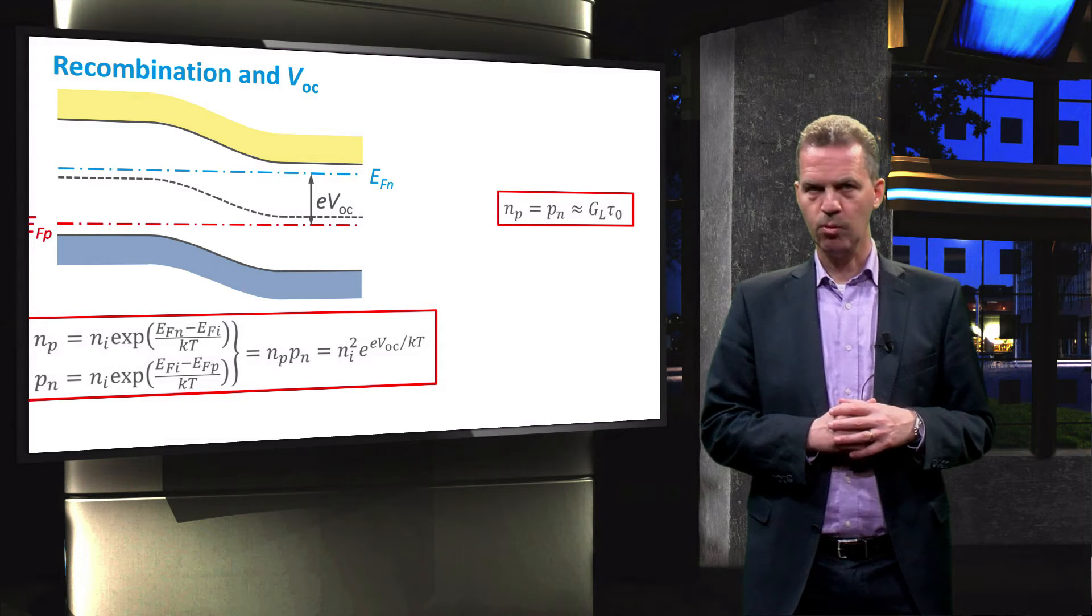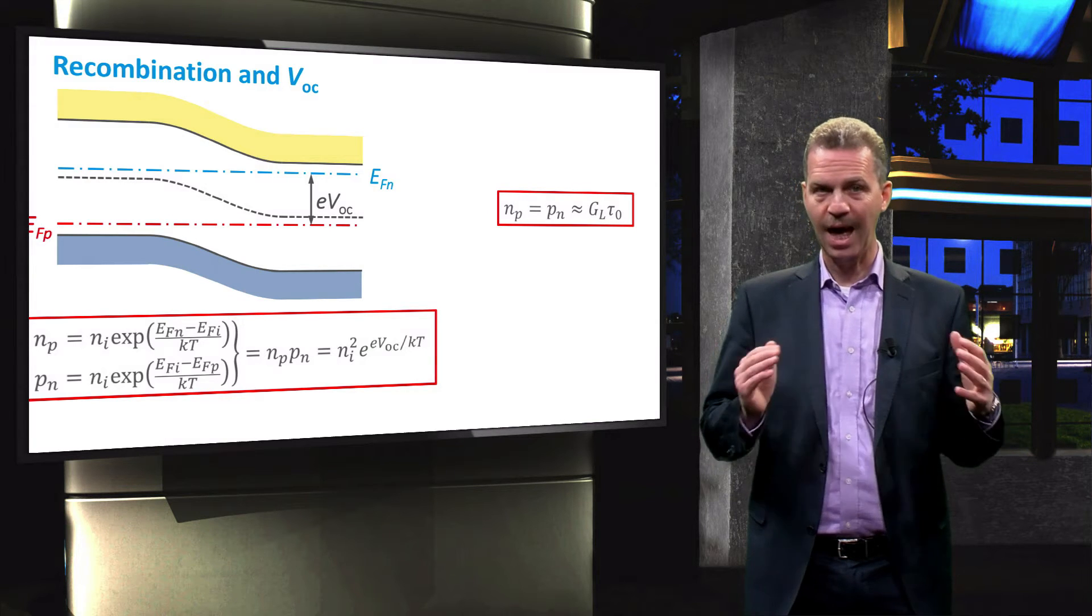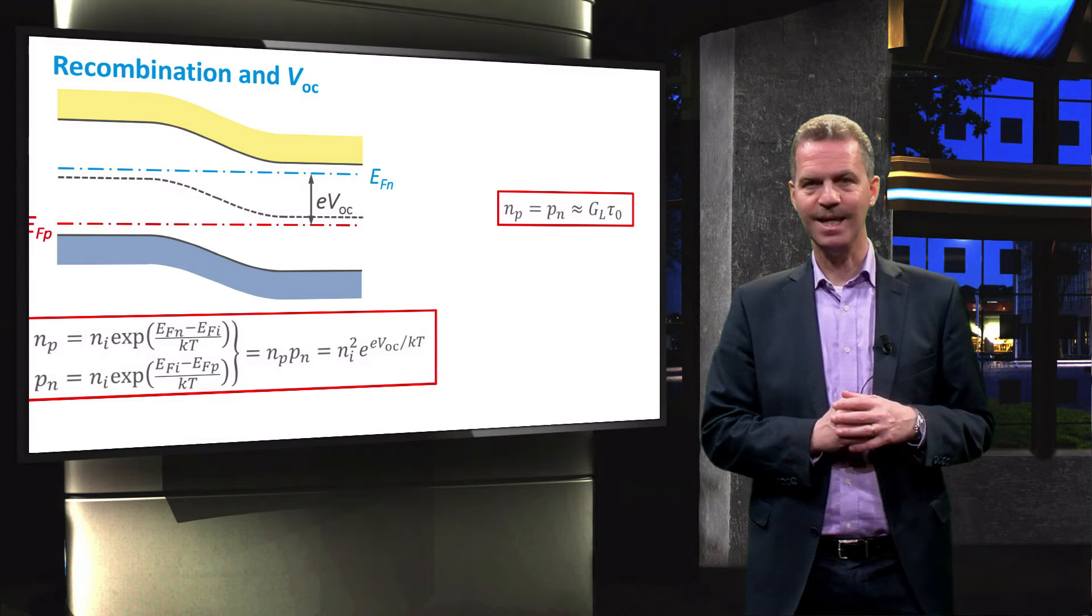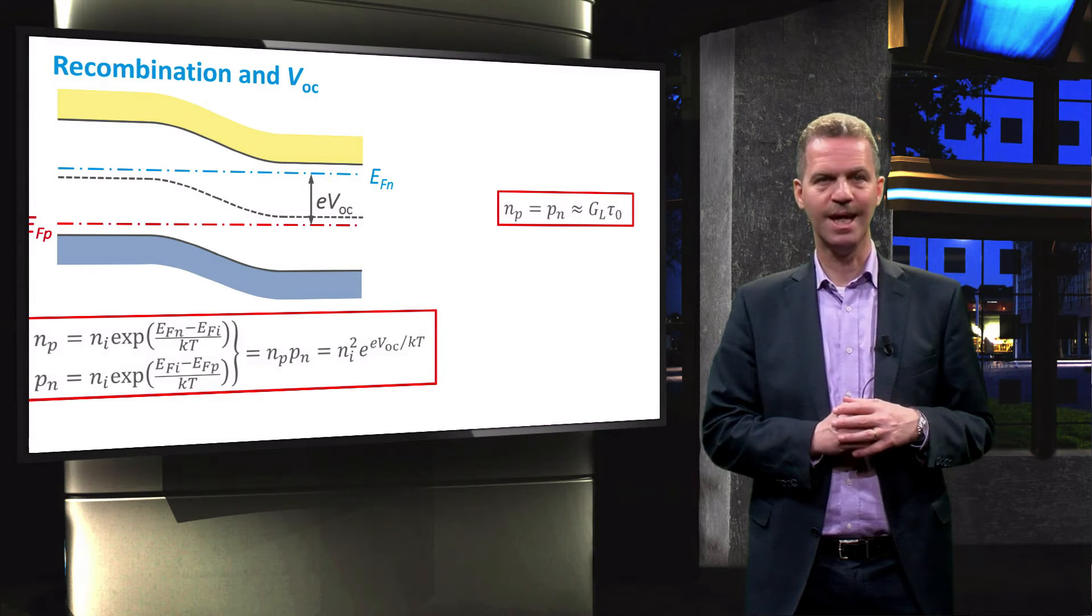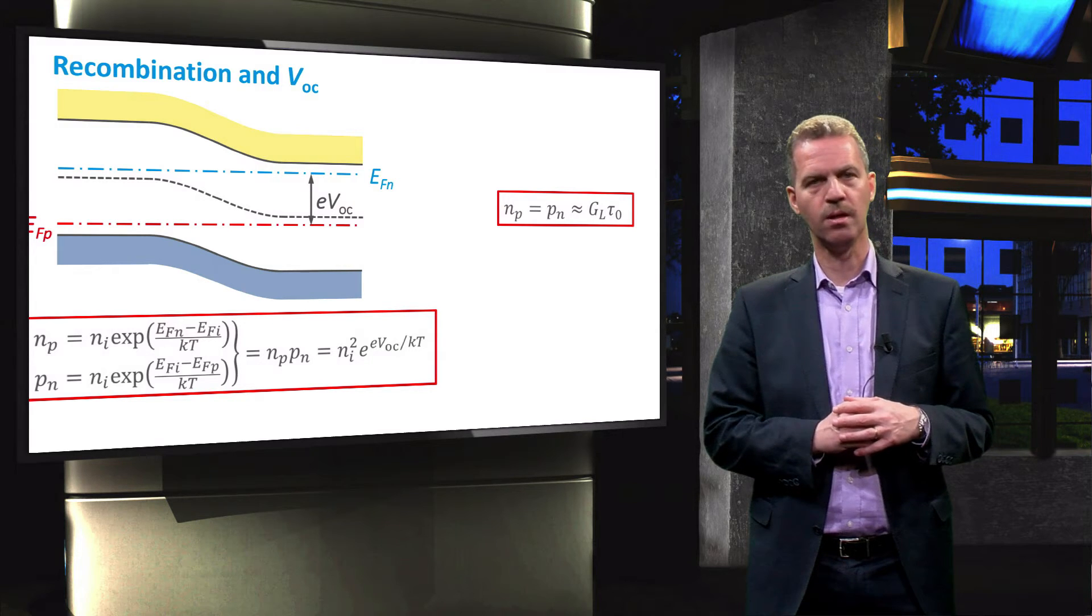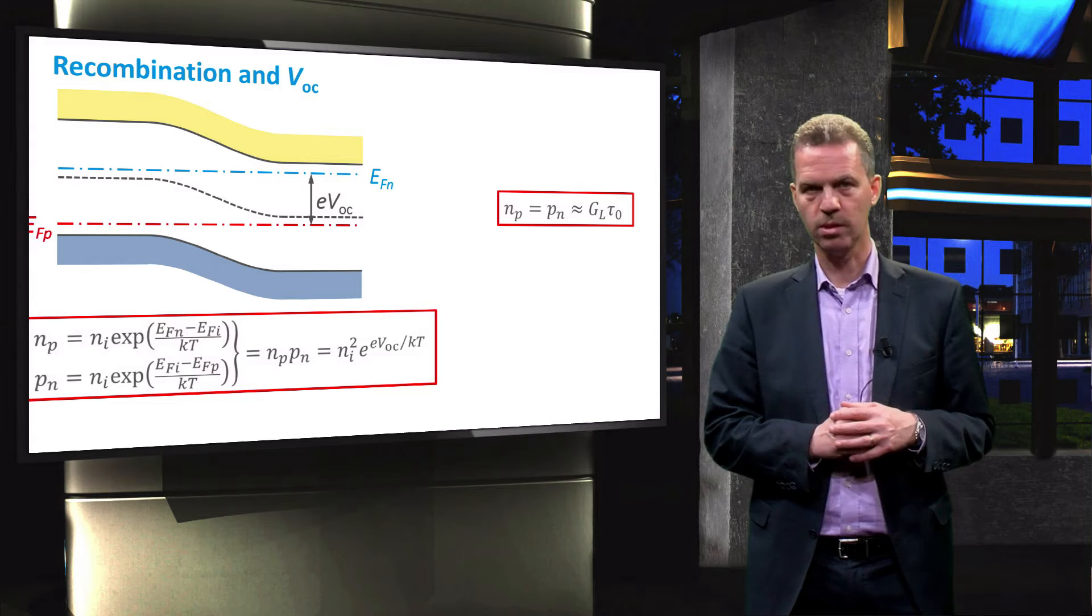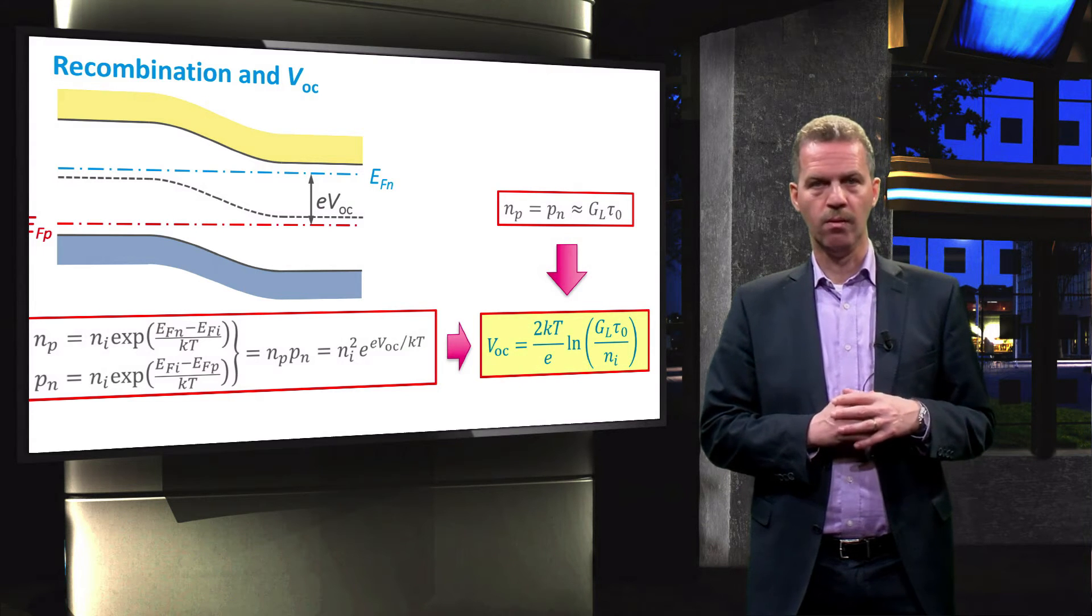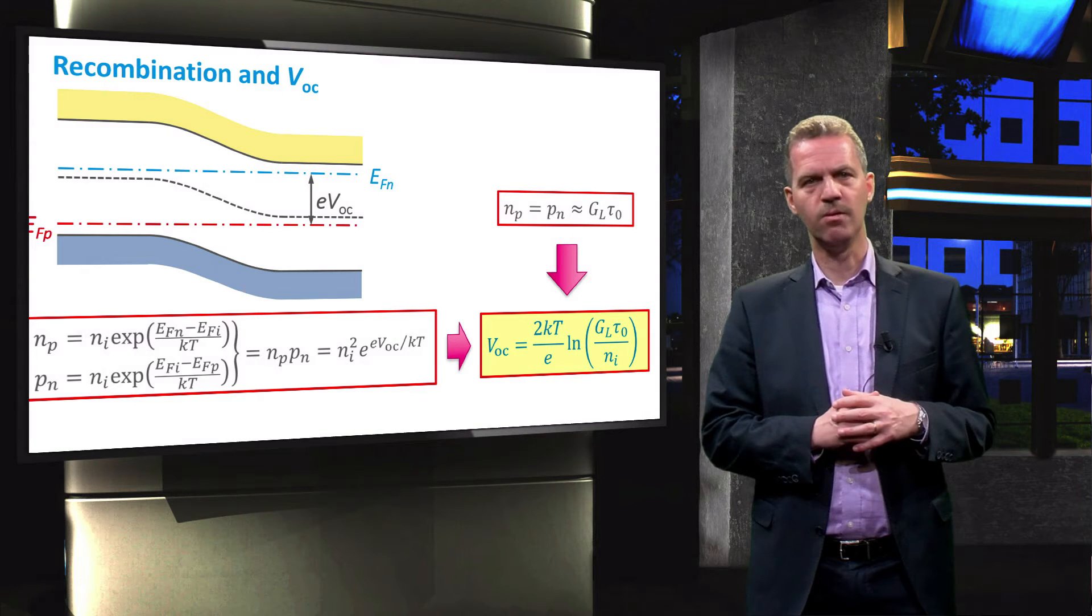If we apply the ambipolar transport equation to the regions outside the space charge region, then we find that the steady state carrier concentration equals the generation GL times the carrier lifetime τ0. Combining the two equations gives an expression for the VOC.